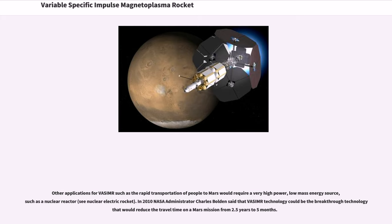Other applications for VASIMR, such as the rapid transportation of people to Mars, would require a very high-power, low-mass energy source such as a nuclear reactor. In 2010, NASA Administrator Charles Bolden said that VASIMR technology could be the breakthrough technology that would reduce the travel time on a Mars mission from 2.5 years to 5 months.